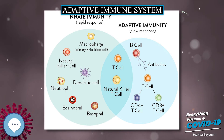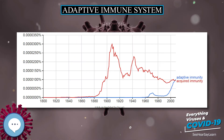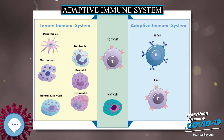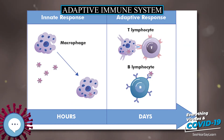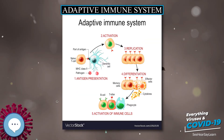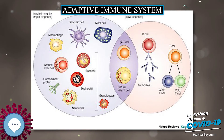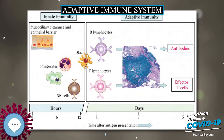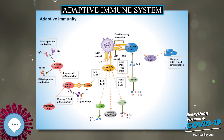Activated CTL then travels throughout the body searching for cells that bear that unique MHC class I plus peptide. When exposed to these infected or dysfunctional somatic cells, effector CTL release perforin and granulysin — cytotoxins that form pores in the target cell's plasma membrane, allowing ions and water to flow into the infected cell and causing it to burst. CTL also release granzyme, a serine protease encapsulated in a granule that enters cells via pores to induce apoptosis. CTL activation is tightly controlled and generally requires a very strong MHC/antigen activation signal or additional signals provided by helper T cells. On resolution of the infection, most effector cells die, but a few remain as memory cells, which can quickly differentiate into effector cells upon a later encounter with the same antigen.